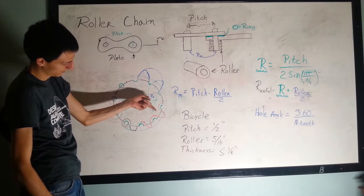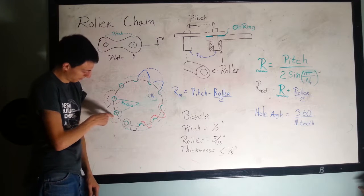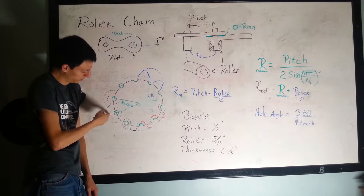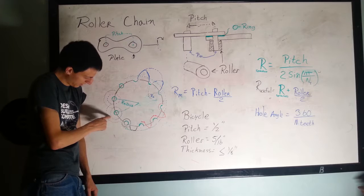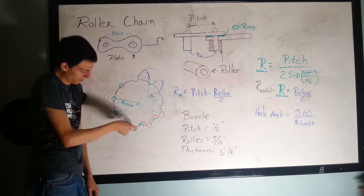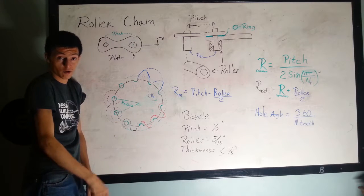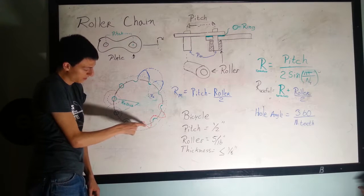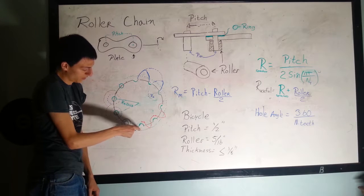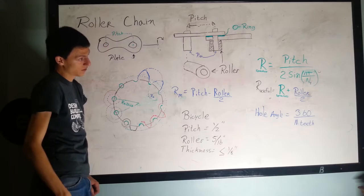They also have stuff like 530 chain that has a fat roller. If you draw the diameter of the roller, like I did here in blue, this radius is bigger than that dotted line.